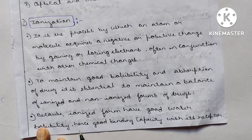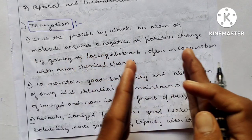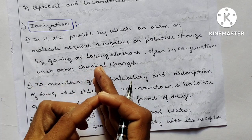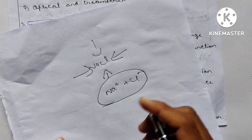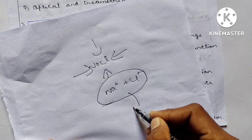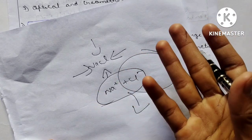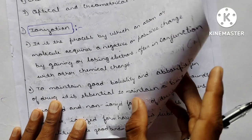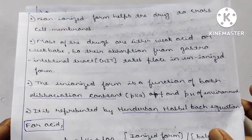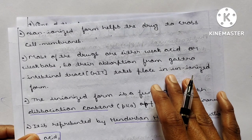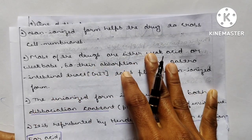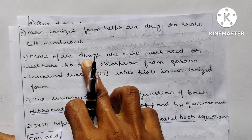Ionized form has good water solubility, hence good binding capacity with its receptor. There are two types: ionized and non-ionized. Ionized drugs have a good relationship with water — for example, sodium chloride dissolved in water forms a clear solution. Non-ionized forms have a good relationship with lipid content like our cell wall and stomach wall, which are composed of lipids. So the non-ionized form helps the drug to cross the cell membrane.